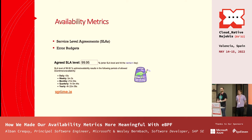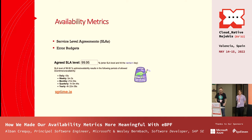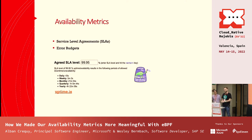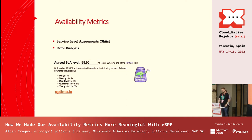There's also the concept of error budgets, which defines how much downtime you're allowed and still uphold your SLA. For example, at 99.95% uptime, the daily error budget is about 43 seconds — which is not a lot. The monthly budget is almost 22 minutes of allowable downtime.